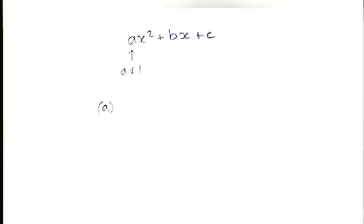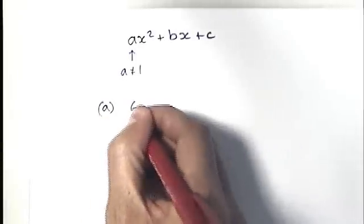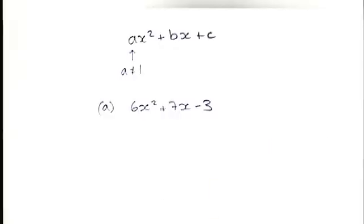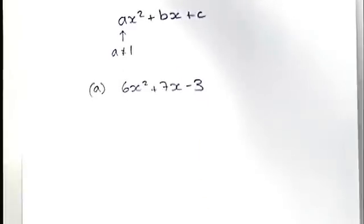If I just take you through a few examples, the first one is 6x squared plus 7x minus 3. What I need you to do is think about how you might have got that using the grid method.